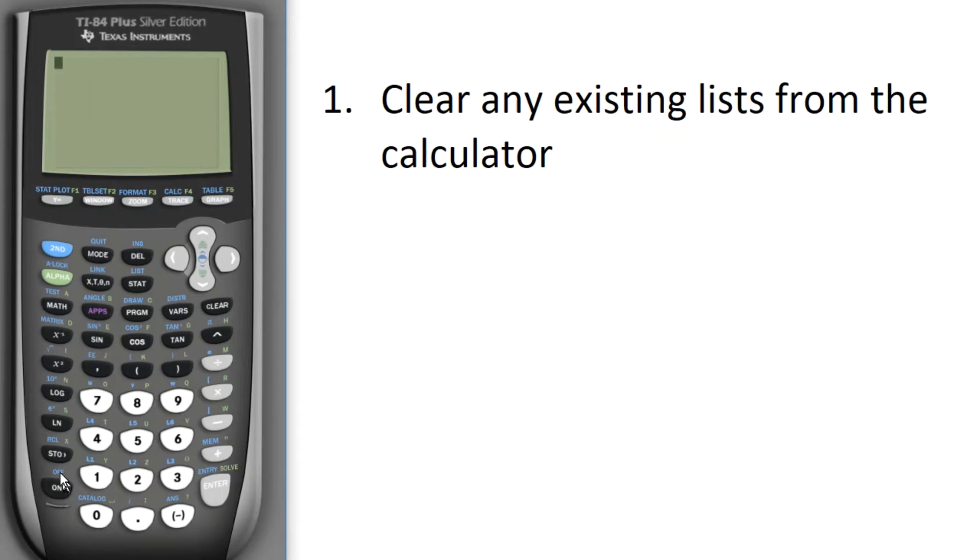Our first step is to clear any existing lists from the calculator. I'm going to hit the STAT key, and I'm going to scroll down and choose CLEAR LIST, item number 4 from the menu.